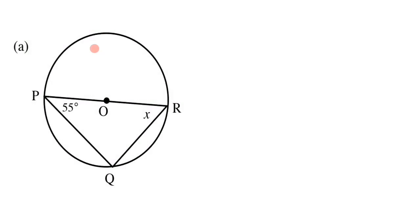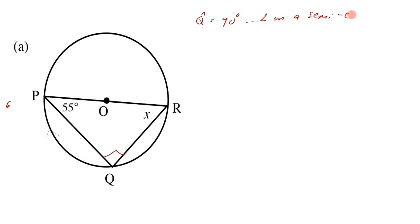Now in exercise A, we are given that POR is a diameter, as it passes through center O. Remember, O in geometry indicates the center, so whenever you have O on your diagram, it represents the center. POR is a diameter and will subtend an angle of 90 degrees on the circumference. The angle subtended is Q, so we say Q equals 90 degrees, with reason 'angle on a semicircle'.